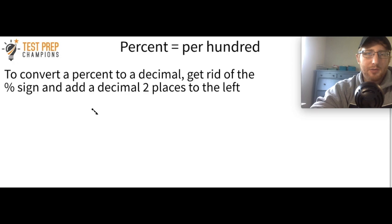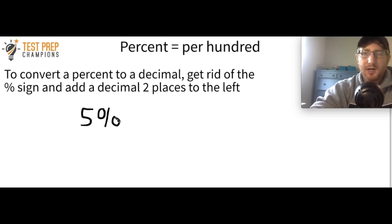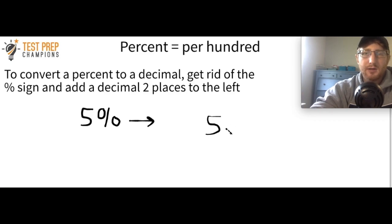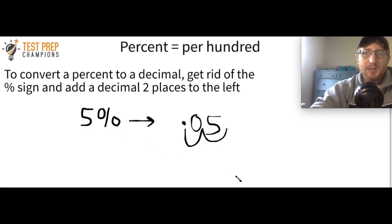Here's another example. Let's say this time we have 5%. What is 5% as a decimal? Pause the video and try this out. What you would do is get rid of that percent sign, and wherever that percent sign was, move two places to the left. Here would be one, here would be two. In this case, when we put our decimal, we're going to have to add a zero in there. So 5% is equal to 0.05.